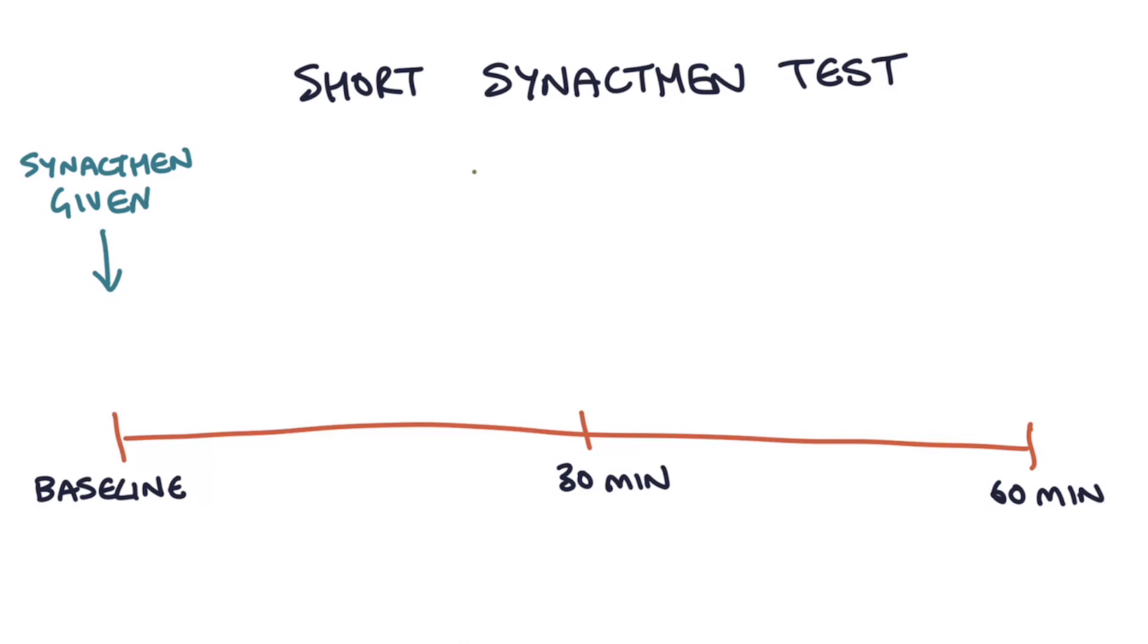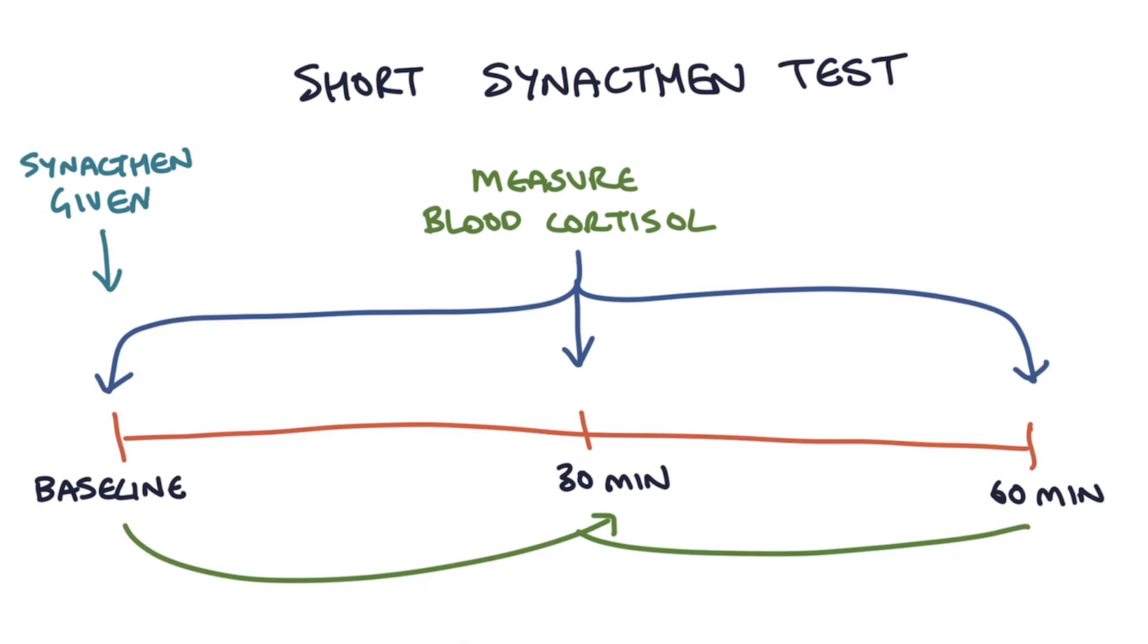We measure cortisol at baseline at the same time as giving the synactin, and then we measure cortisol again at 30 minutes and at 60 minutes. We would expect in a healthy adrenal gland the level of cortisol will at least double in response to that synactin.